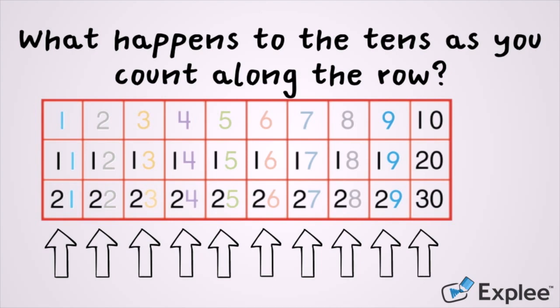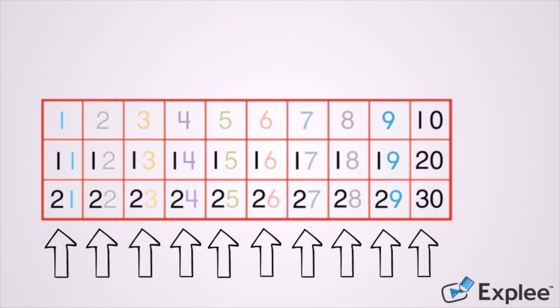What happens to the tens as you count along the row? Let's figure this out by counting the number in the row with the 20s: 21, 22, 23, 24, 25. What happened to the tens? Remember the part that wasn't colored. It stayed the same. All of the numbers in the 20s start with the number two.